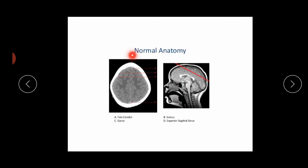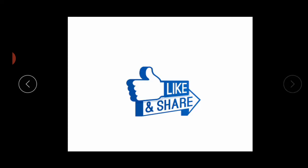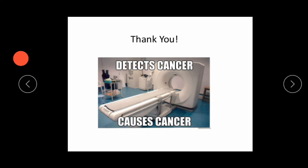On this final normal anatomy slide, we can see the falx cerebri, sulci, and gyri. The superior sagittal sinus is also visible here. That's all for today — if you like this video, please like, share, and subscribe. Thank you.